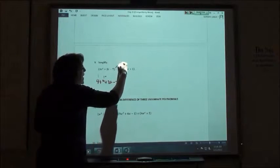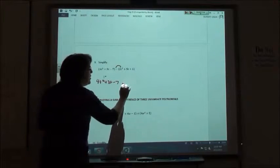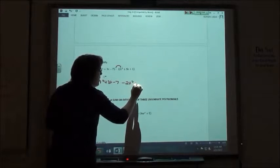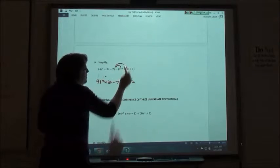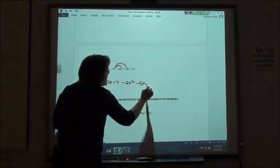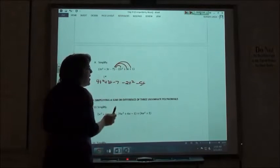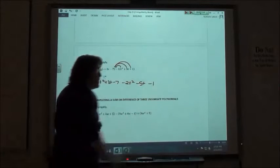But here I'm going to say, okay, a negative times a positive is going to make that a negative 2t squared. Negative times a positive, going to make that a minus 5t, and then a negative times a positive again, going to make that a minus 1.